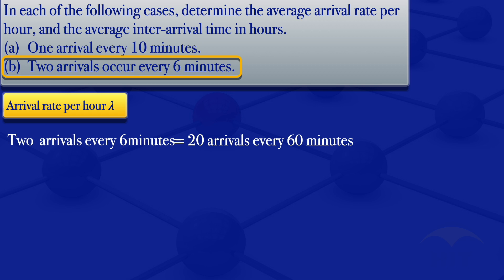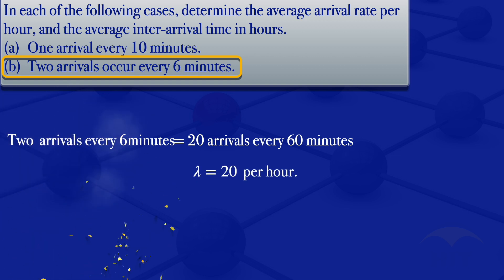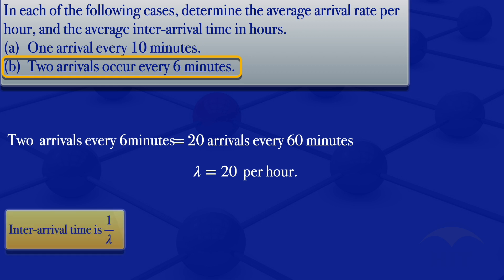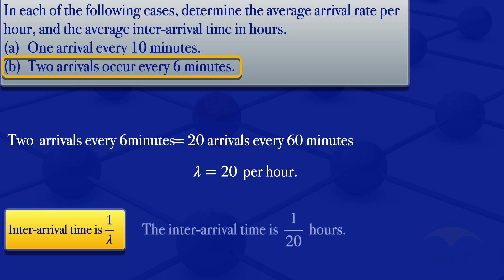So in this case, our arrival rate per hour — the lambda — is 20. Moving on to the inter-arrival time: as noted before, the inter-arrival time equals 1 over lambda. Our lambda is 20, therefore our inter-arrival time per hour is 1 over 20.